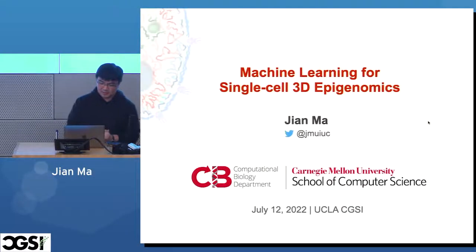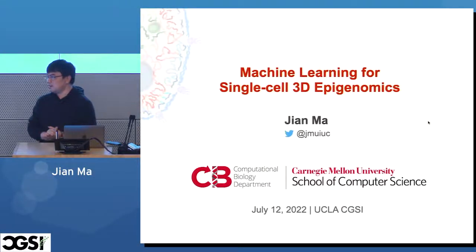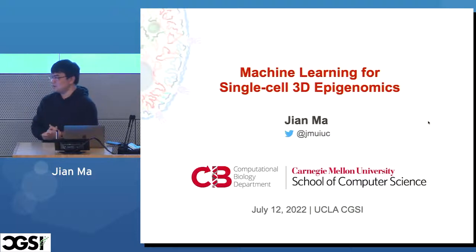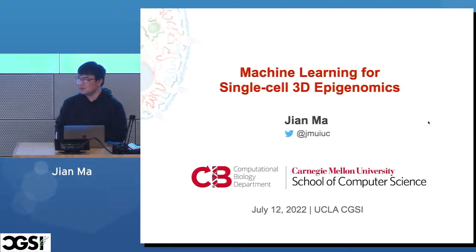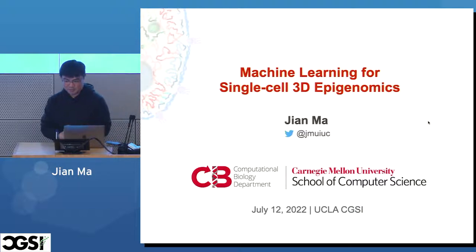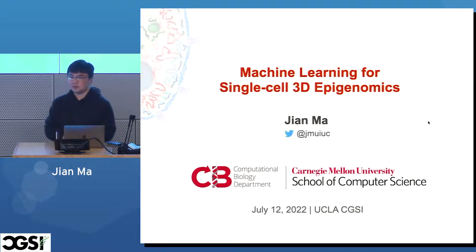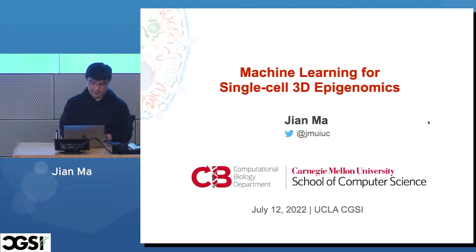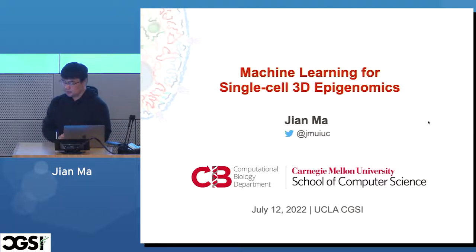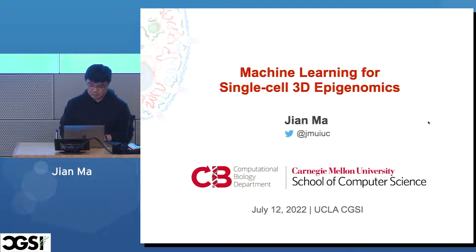Hi, my name is Jian Ma. I'm from Carnegie Mellon and I have been a regular faculty participant for CGSI. I think this is my number four, if I'm not mistaken. So I look forward to knowing many of you in the audience. I will give a mix of research talk and tutorial in the next 45 minutes, and I'll give you an introduction of how chromosomes are organized in three-dimensional space within the cell nucleus.